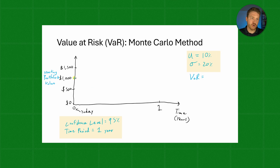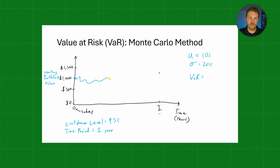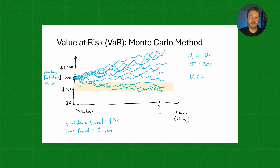Every single simulation is going to start at $1,000. Our mean expectation is that one year in the future we would basically have $1,100. So if we do thousands of simulations, we're going to have so many results that go so many different ways. Every single simulation starts at $1,000 and then progresses over time. After running thousands and thousands of times, we take all the results and find the fifth percentile worst outcome — let's say that ends up being about $600.